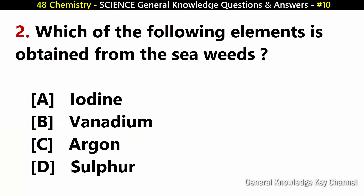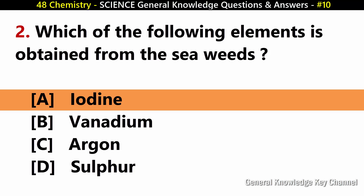Which of the following elements is obtained from seaweeds? Answer A: Iodine.